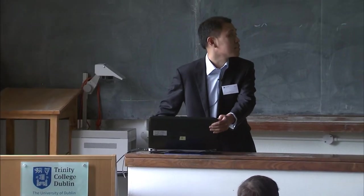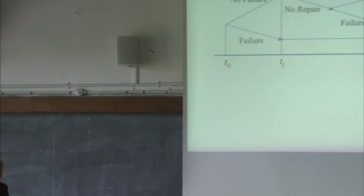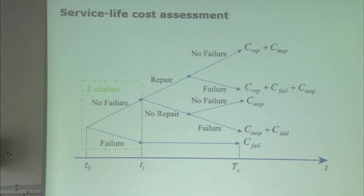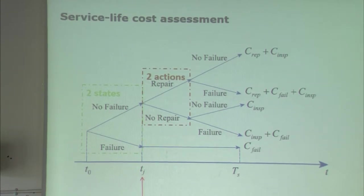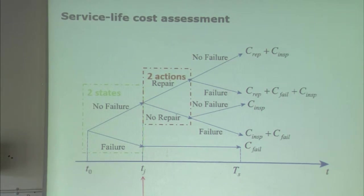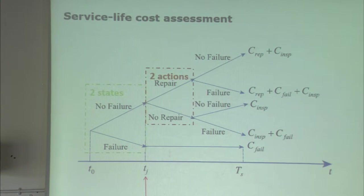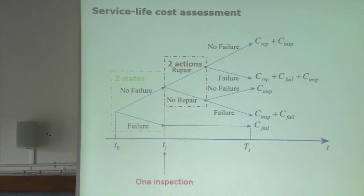We consider one structure starting from year T0 to the end of service life, called TS. We have two states: failure or no failure. If the structure fails, the failure cost is called C_fail. At year TJ, we have one inspection. From the inspection results, we can make two decisions: repair, or no repair — also called do nothing. In both actions, afterwards we again have two possibilities: failure or no failure. This is the general decision tree for the performance of one engineering structure.